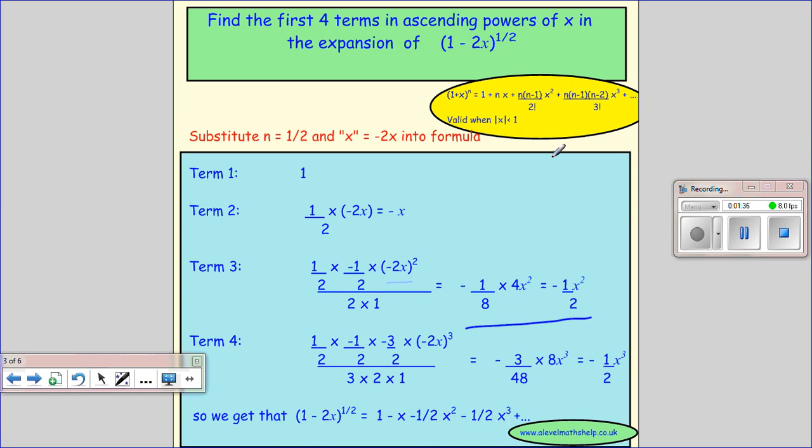And then the last one is n times n minus 1, n minus 2, so that's a half times minus a half times minus 3 over 2 times minus 2x all cubed over 3 factorial, 3 times 2 times 1. And then you can work this out to get your minus a half times x cubed.